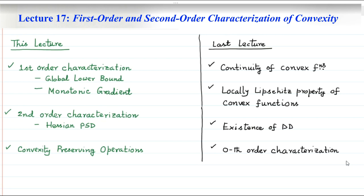Recollecting from the last class, we discussed the continuity of a given convex function. We saw that if a function f is convex on a given open convex set, then the function must be continuous in that open convex set. In particular, if we consider a function f on a convex set which is not necessarily open, then the function must be continuous in the interior of the given convex set X.